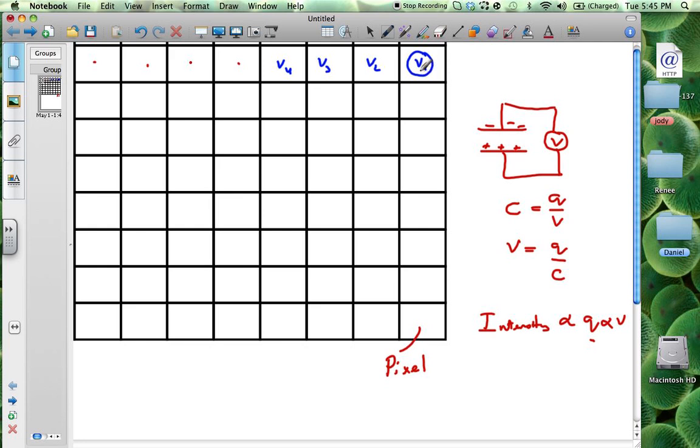Then what happens is that these voltages are read off systematically. So both the position and the voltage is noted. This voltage is put into a digital form, therefore in zeros and ones. And the position is noted. And that voltage therefore gives an indication of the amount of light in each one of these pixels over here.